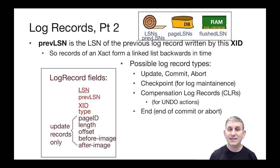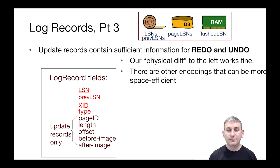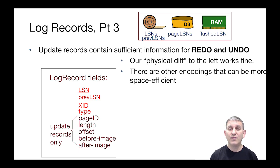The thing on the left is an example of an update log record, and any other log record would have at least the first four fields as well. The update record has sufficient information for redo or undo — it's essentially a physical diff of the bytes on the page. There are other encodings that can be more space-efficient than just writing down a change in bytes, and we won't cover this in this class. But be aware that in a commercial relational database and in the original ARIES protocol, they had more compact representations for these diffs that would allow undo and redo.